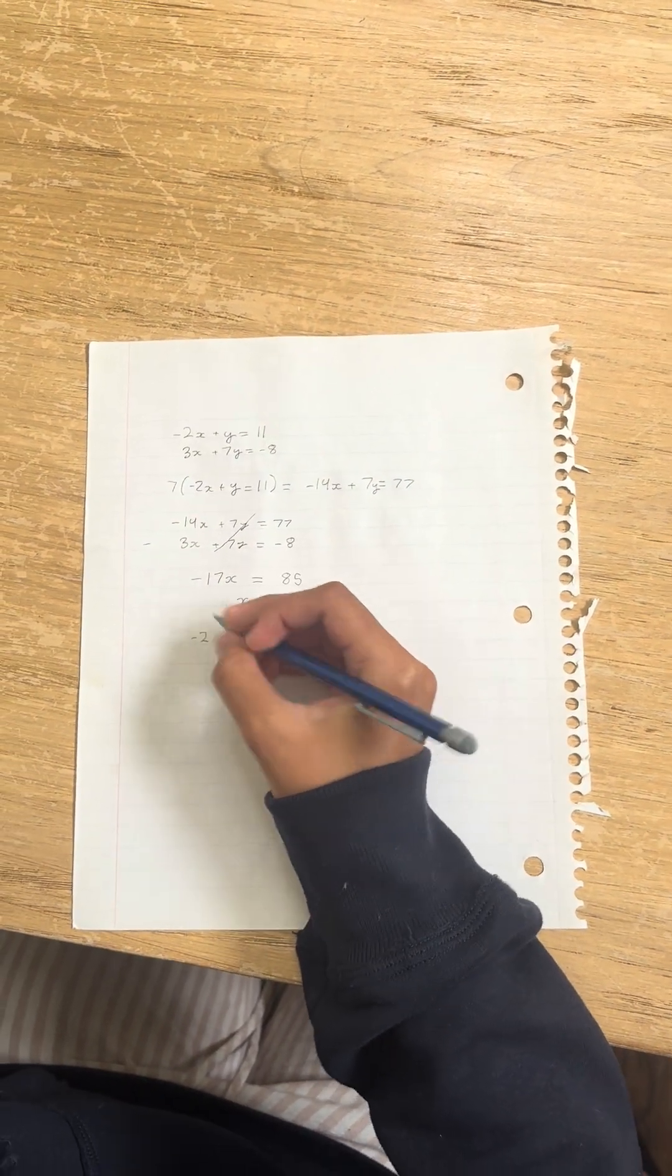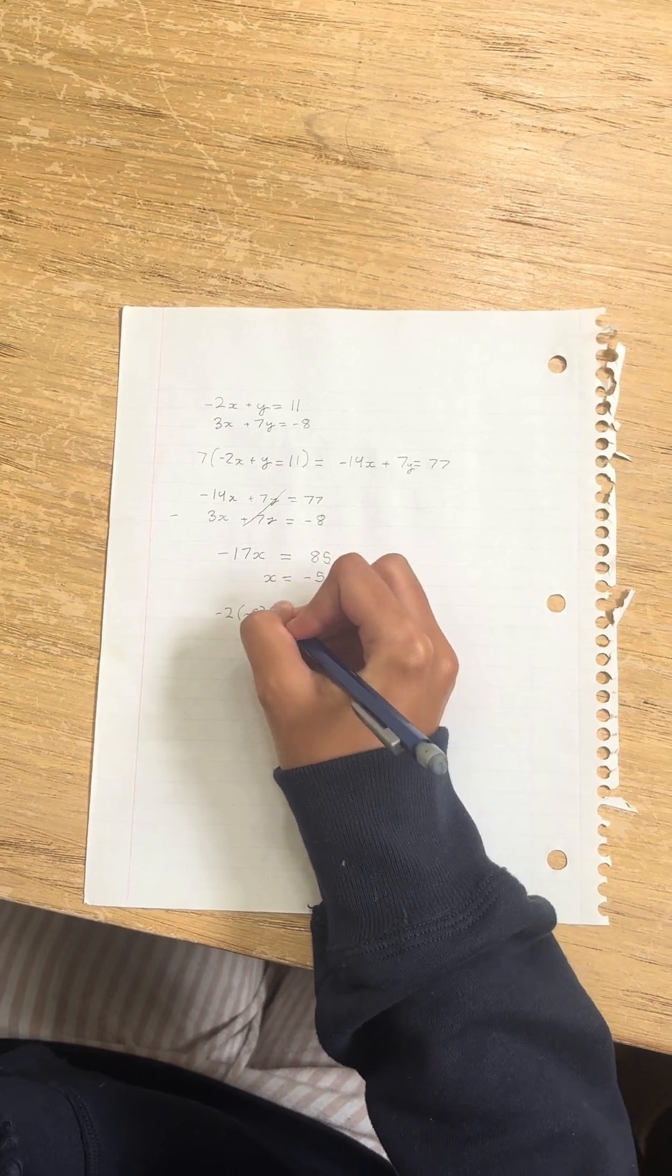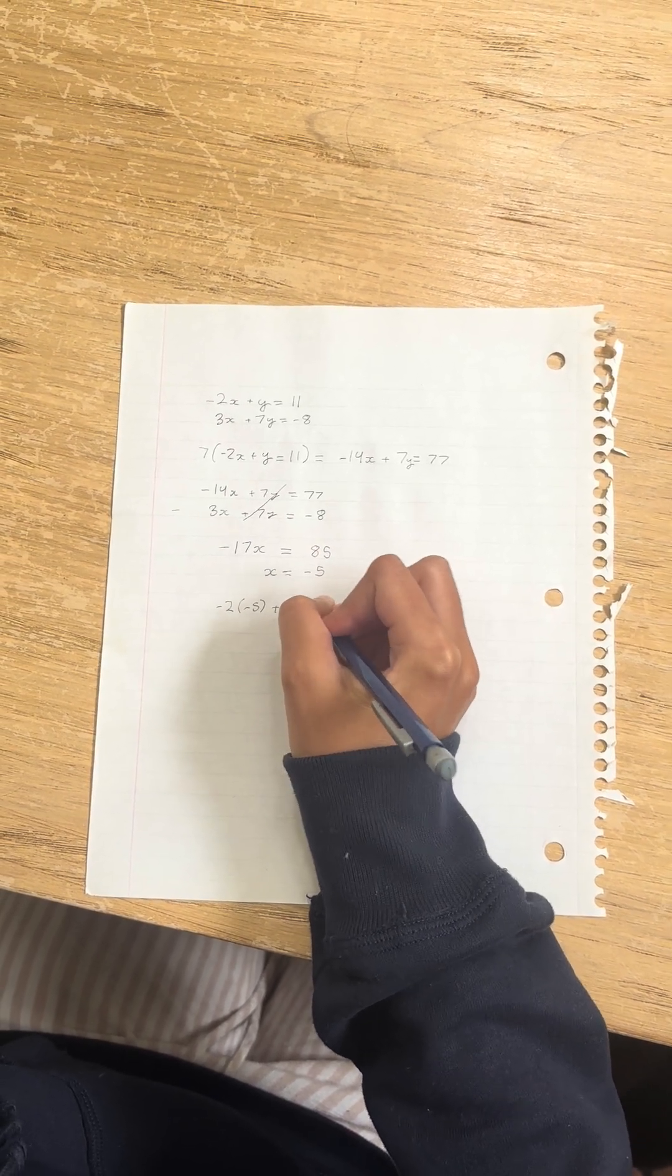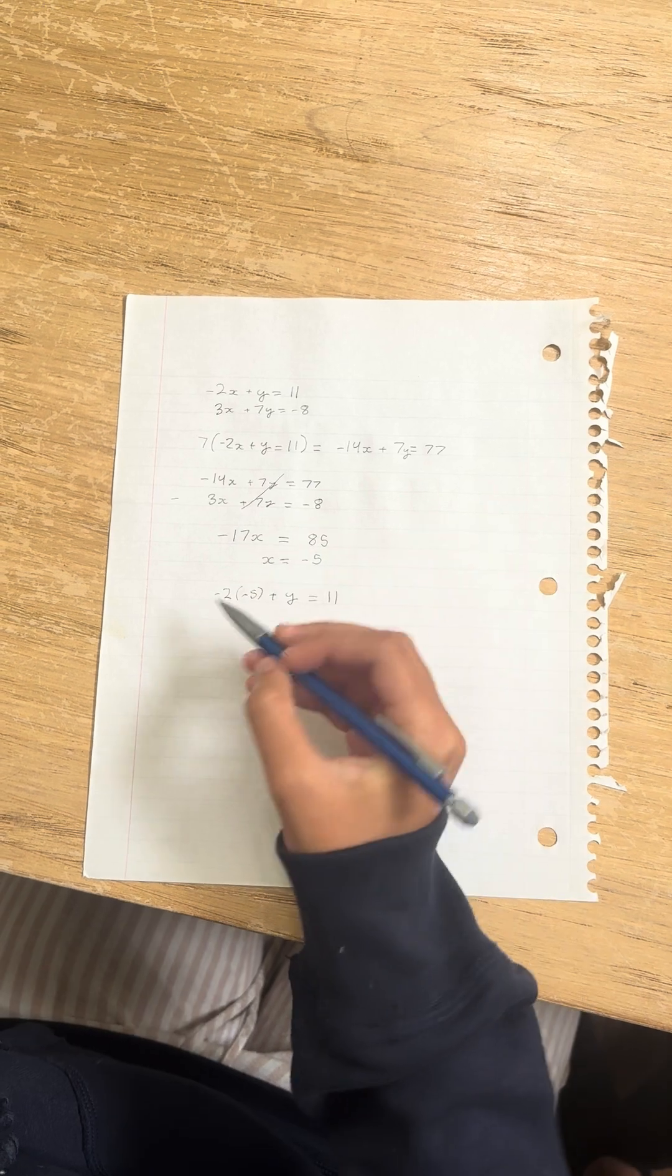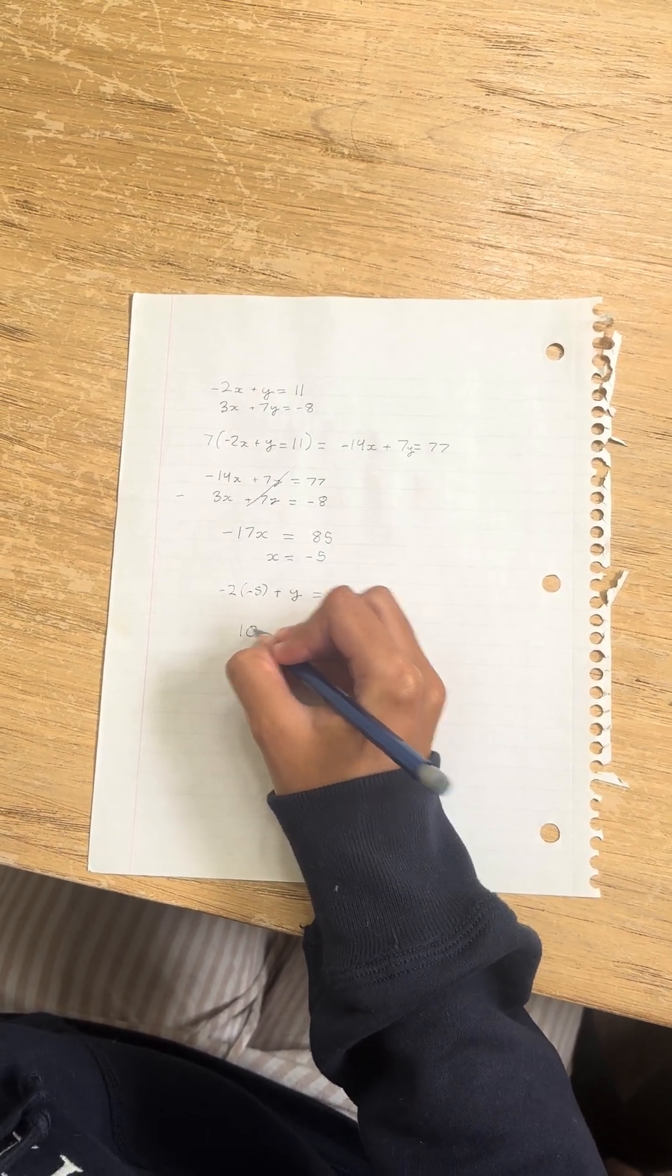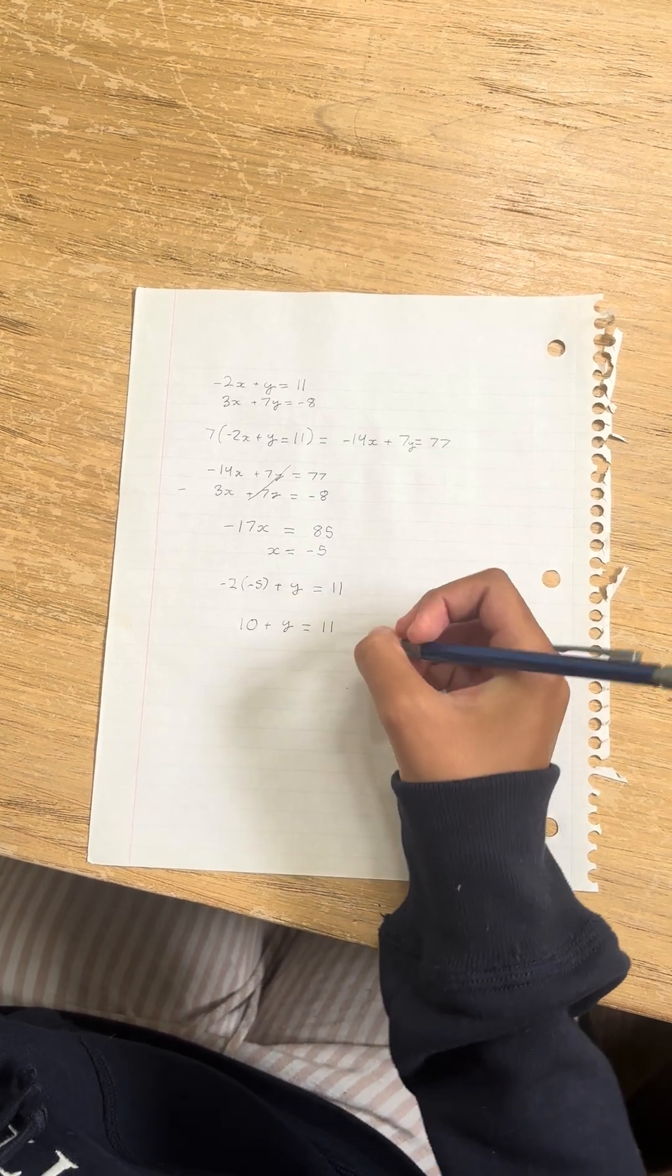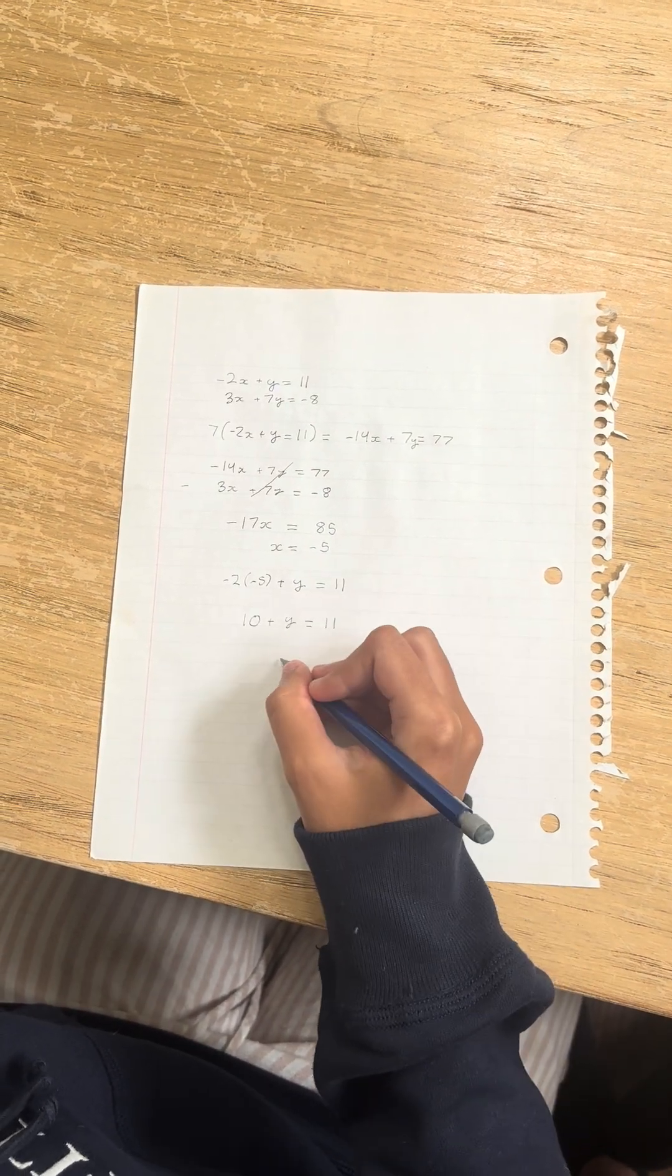So we have minus 2 parentheses minus 5 plus y equals 11. Minus 2 times minus 5 is 10 plus y equals 11. And we can immediately see that y equals 1.